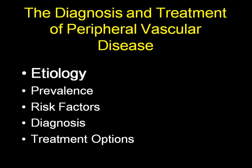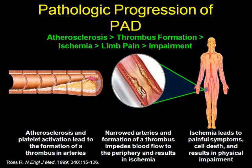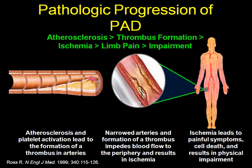The etiology of peripheral vascular disease is essentially atherosclerosis, thrombus formation, ischemia, limb pain and impairment. This is similar to what you have studied for MI and stroke — the etiology is pretty much the same. It is atherosclerosis and platelet activation that eventually leads to peripheral vascular disease.